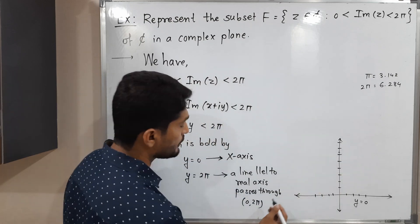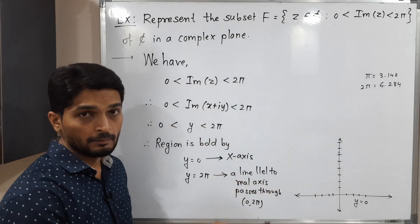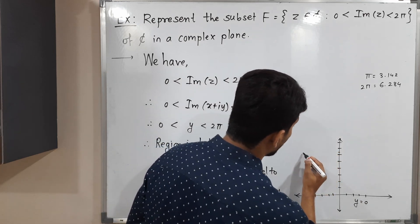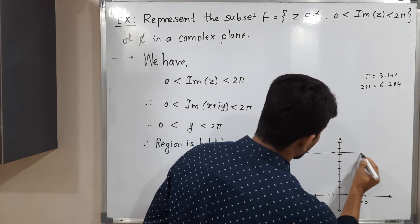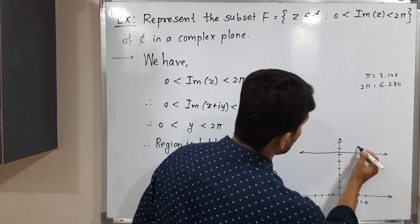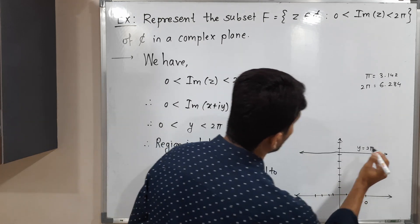So this is that point 0, 2π, and we have a line which is parallel to this real axis. Let me draw here real axis and passes through this point. So its equation is y equals 2π.